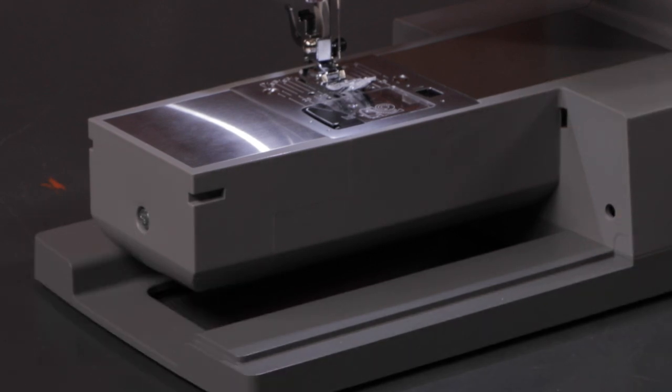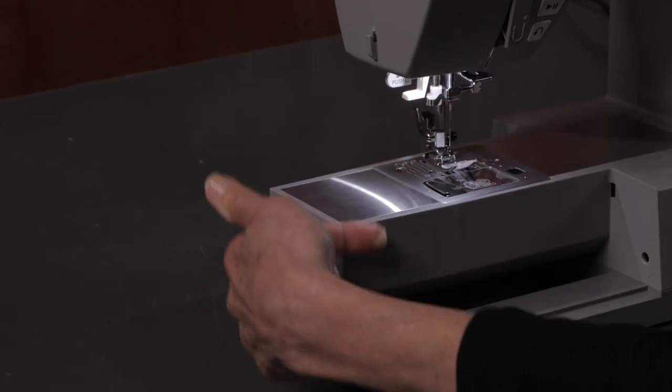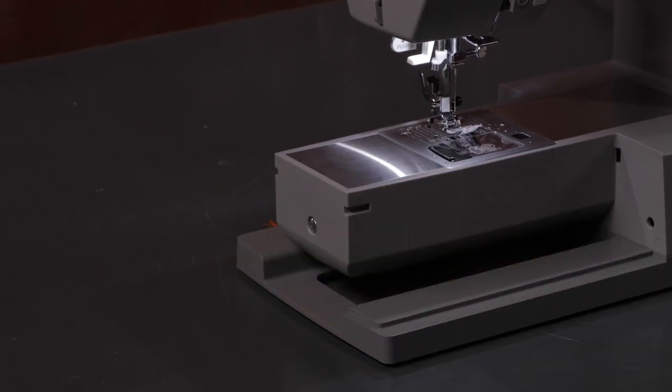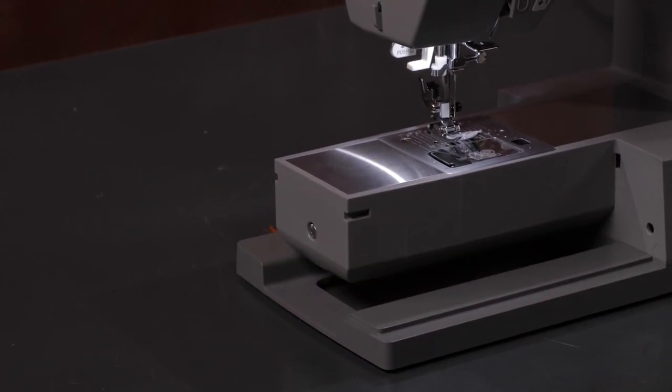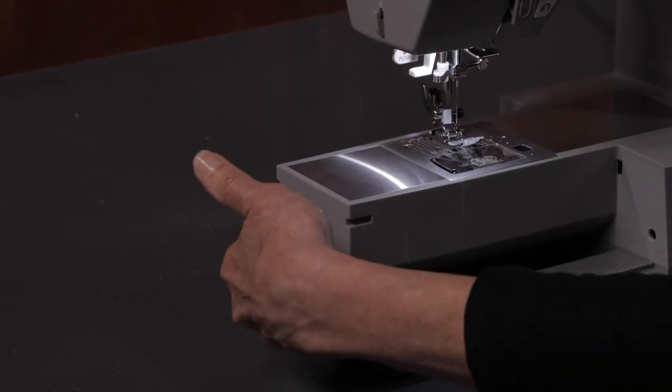It gives you access to a free arm, and the free arm is a smaller area that makes it easier when you want to sew pants hems, sleeve cuffs, maybe even around the top of a tote bag because it's just a smaller more circular area.